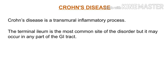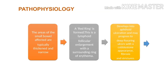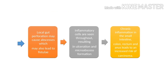If we look at the GI tract, there are chances that we can see. Looking at the pathophysiology, there is a small bowel effect. Typically it is thick and narrow. There is a red ring, lymphoid follicular enlargement, surrounding erythema, ulceration, deep ulcers, fibrosis, and strictures. Then you develop local cuts, proliferation and abscess. The inflammatory cells are full where there is ulceration. Chronic inflammation in the small intestine, colon and rectum leads to increased risk of carcinoma.